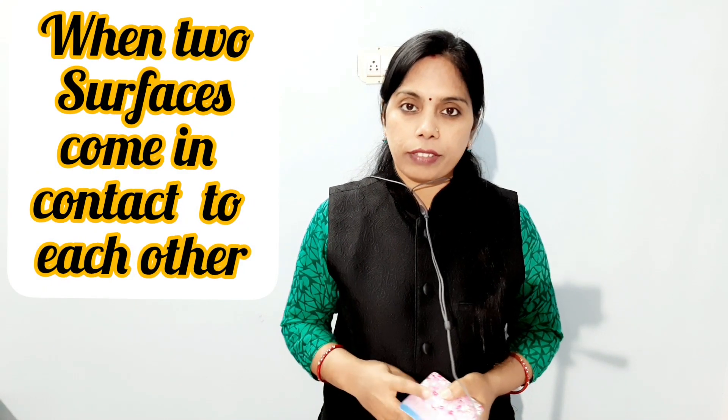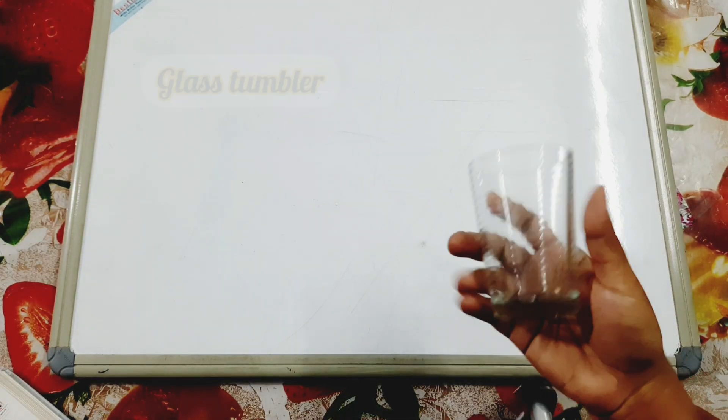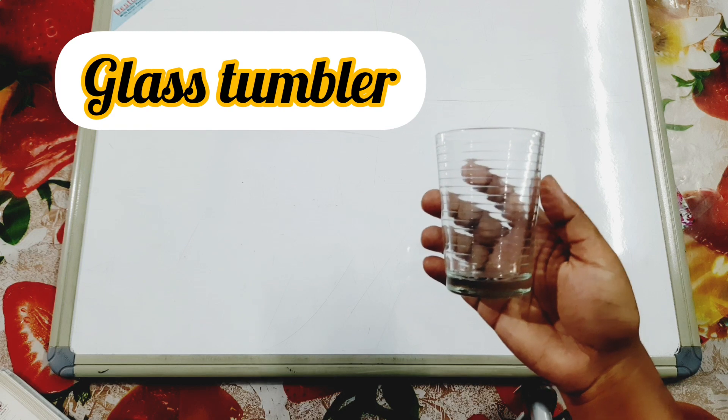Friends, when two surfaces come in contact with each other, they exert force on each other and that force is known as frictional force. This is a glass tumbler.